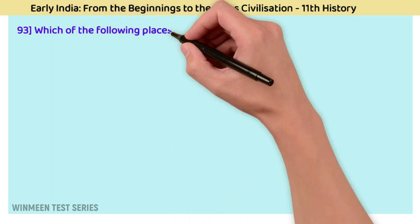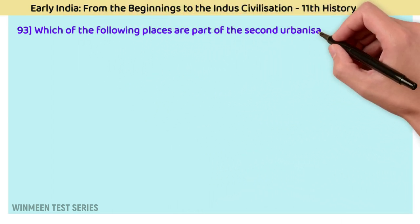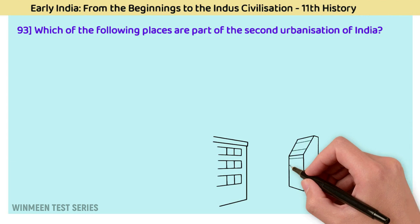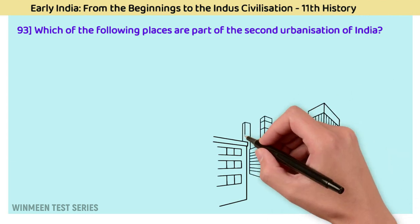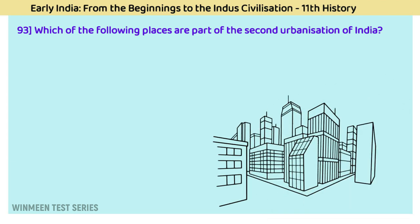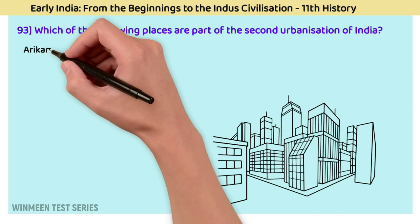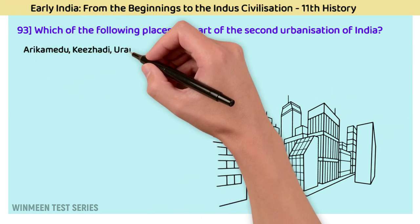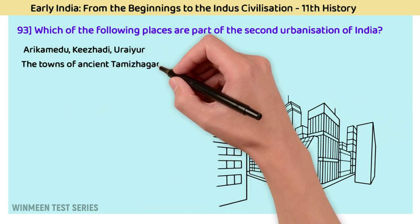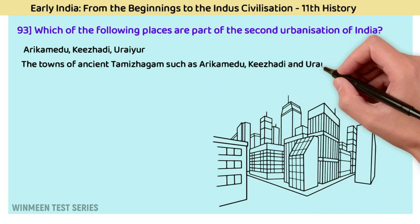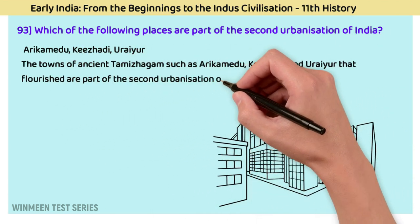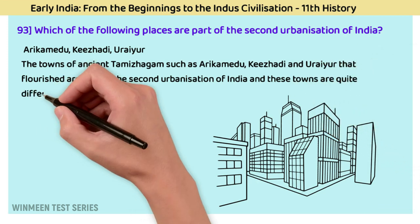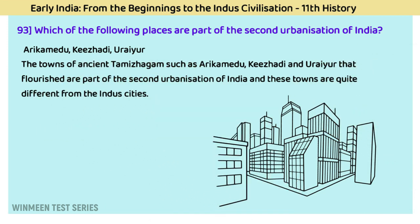Question 93: Which places are part of the second urbanization of India? The answer is Arikamedu, Keezhadi, and Urayur. The towns of ancient Tamilakam — such as Arikamedu, Keezhadi, and Urayur — flourished as part of the second urbanization of India. These towns are quite different from the Indus cities.